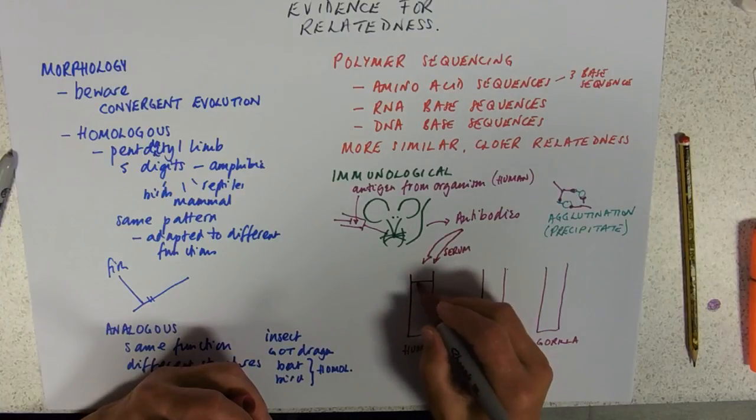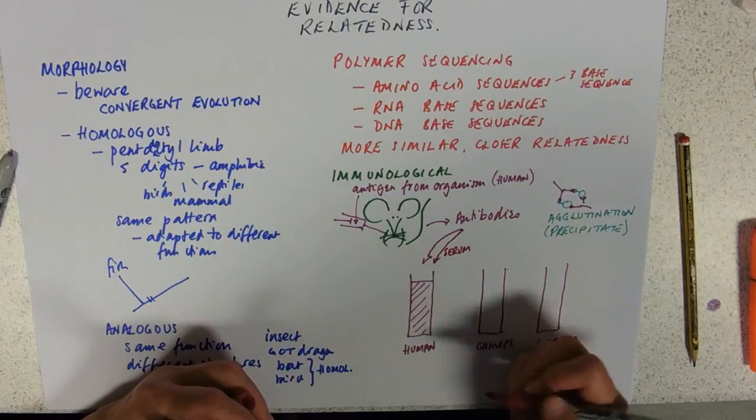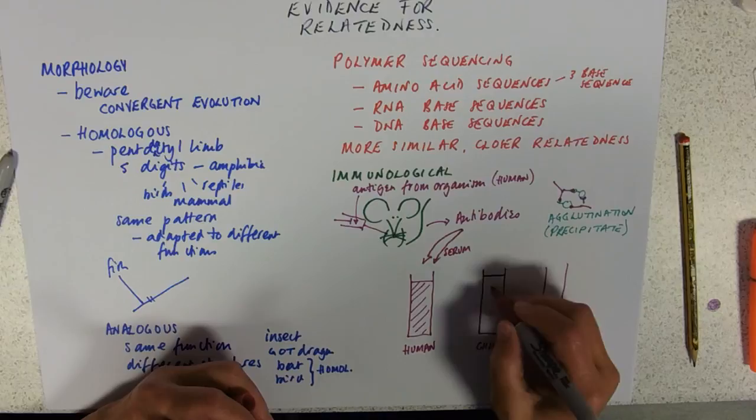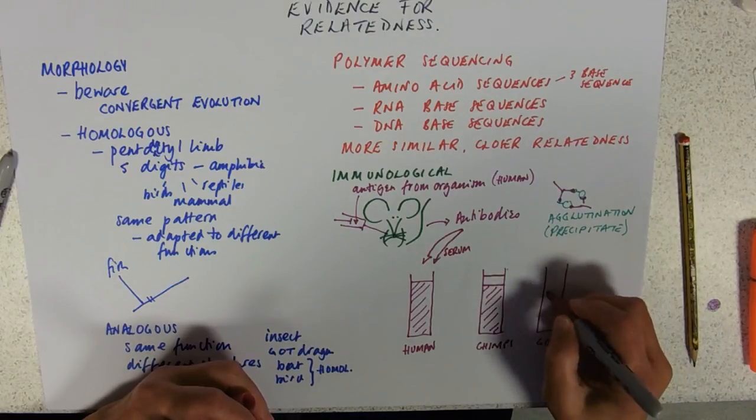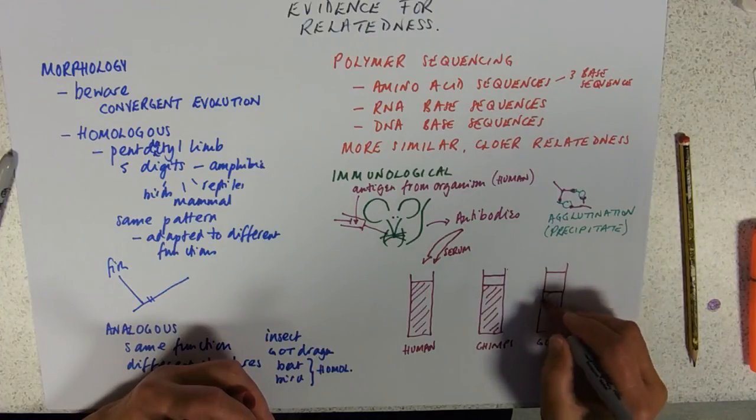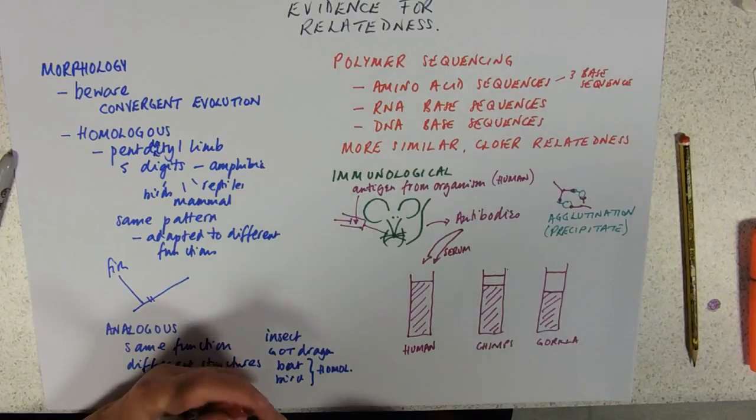So obviously humans, it's produced antibodies. It clumps together all of the cells, so you get 100% agglutination. The chimp doesn't have quite the same antigens. So not all of those will react and you get less. And if the gorilla is even less related, you only get so much clumping.